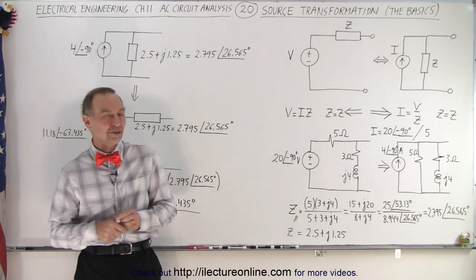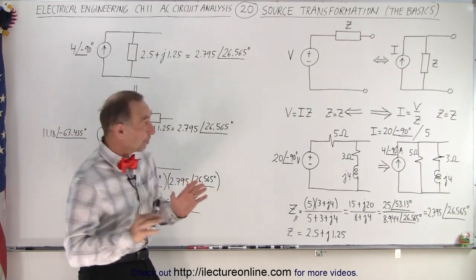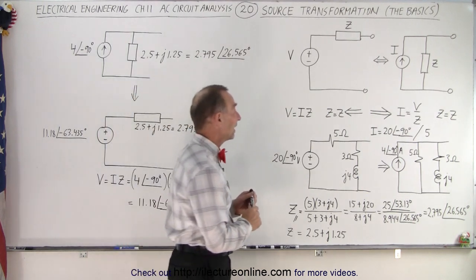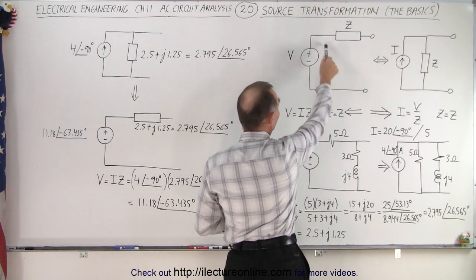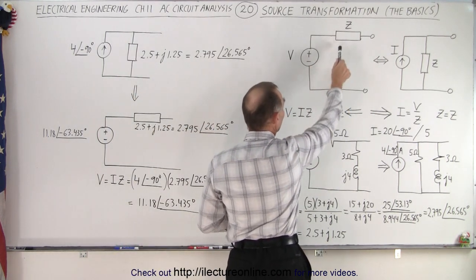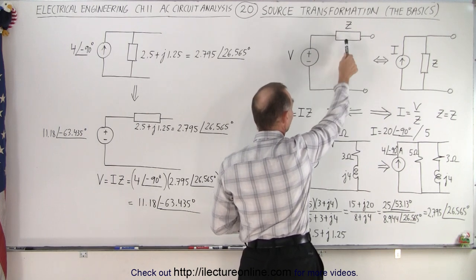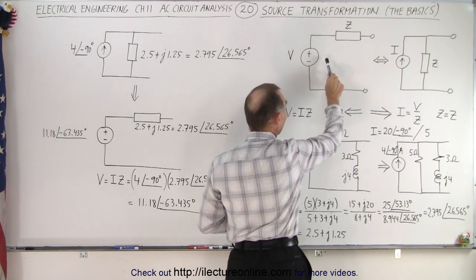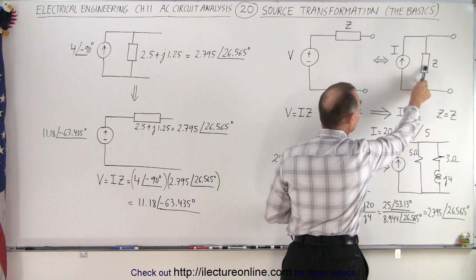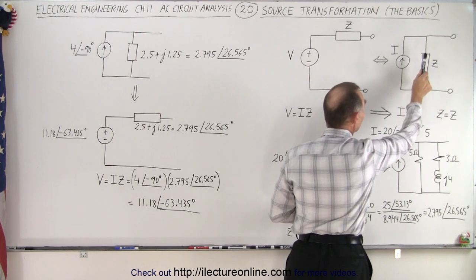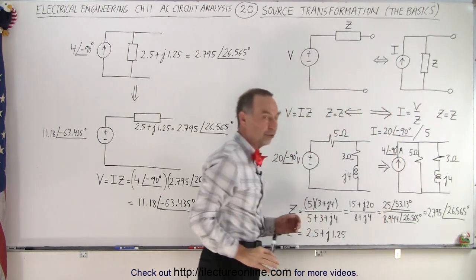What is source transformation? In simple terms, it's converting something that looks like this — where we have a voltage source and an impedance in series with the voltage source — and converting it to a current source with the impedance in parallel to the current source.